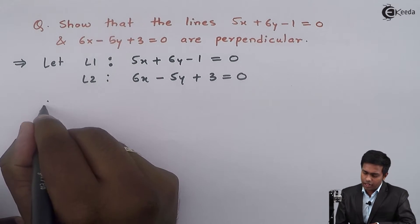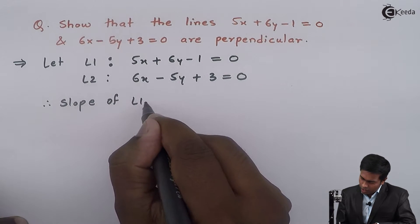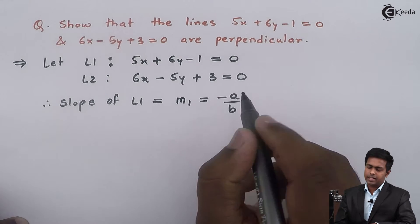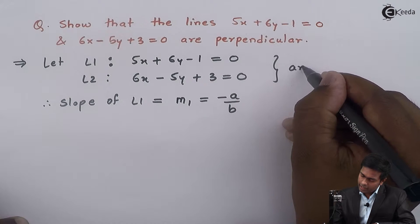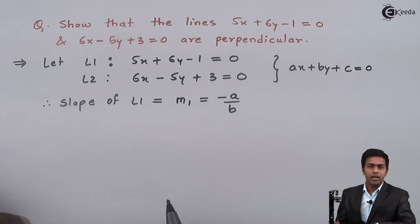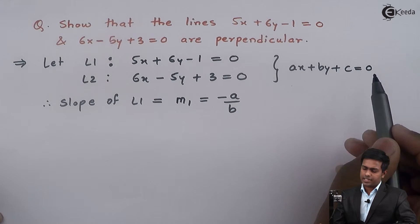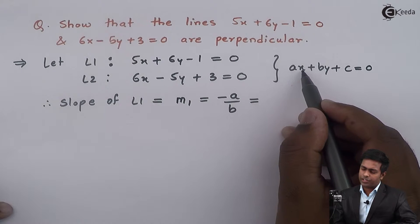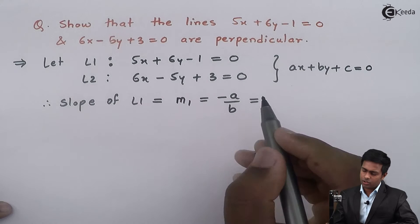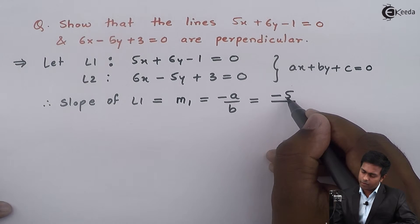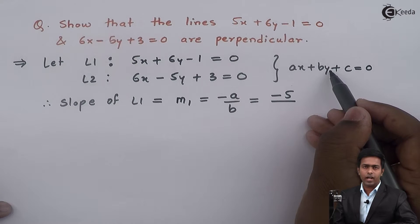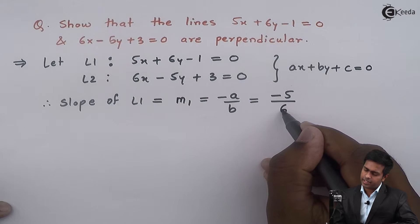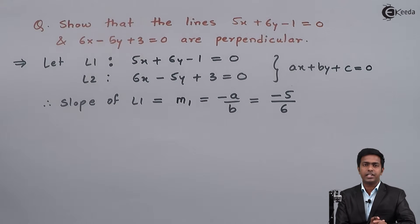Now let us find the slope of the first line. The slope of line L1 is M1, given by the formula minus A upon B, since the line is in the form Ax plus By plus C equal to 0. Comparing: A is the coefficient of x, which is 5, and B is the coefficient of y, which is 6. Therefore, the slope of line L1 is M1 equals minus 5 upon 6.